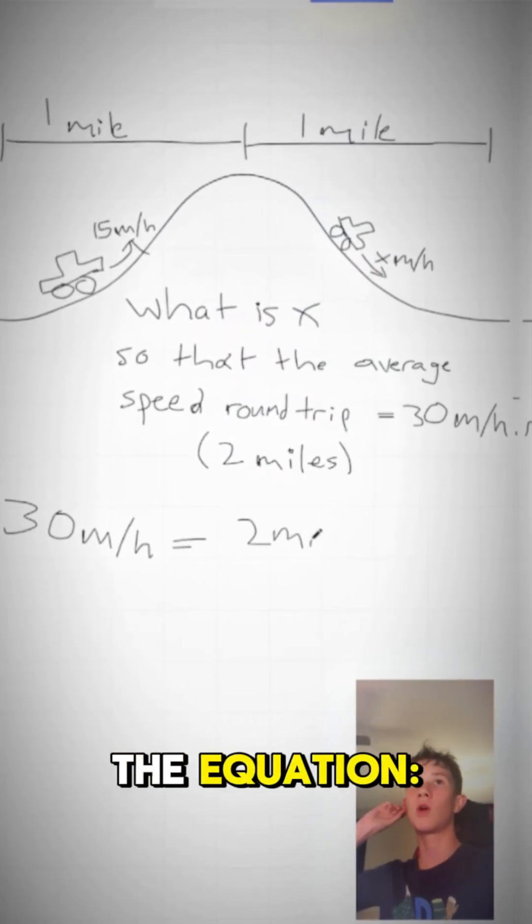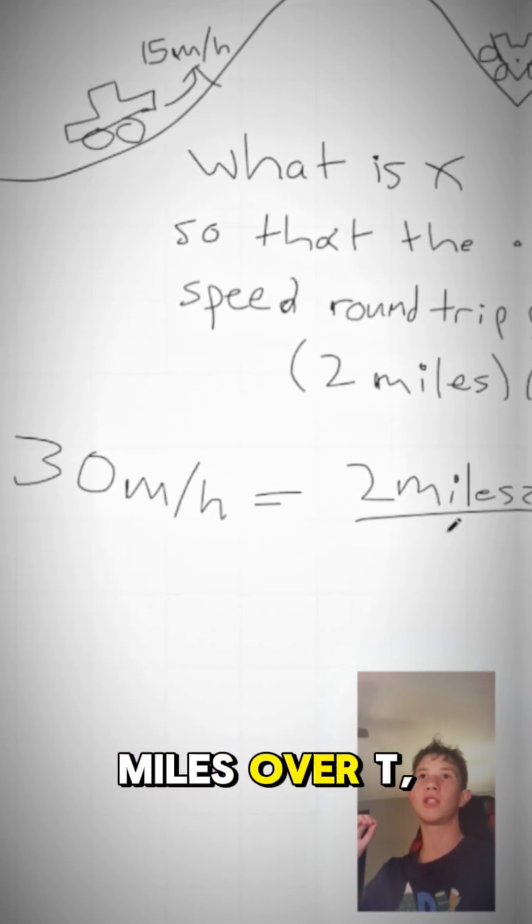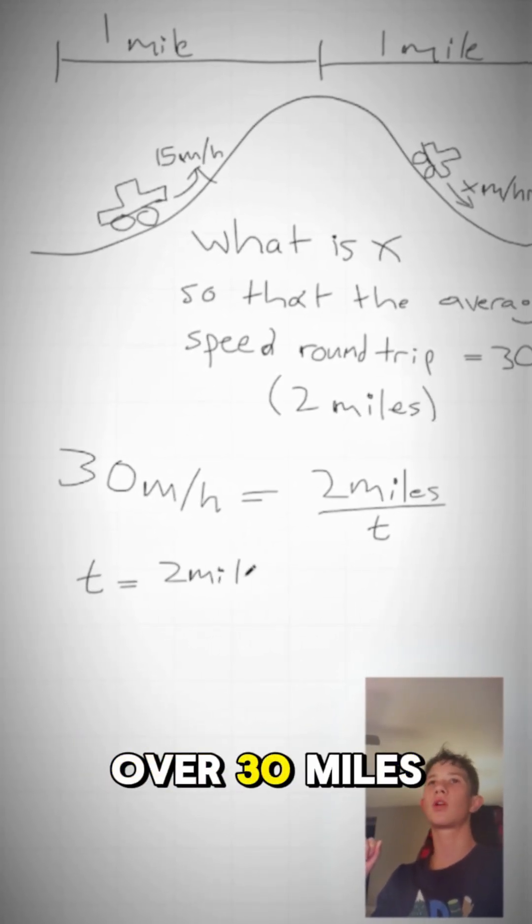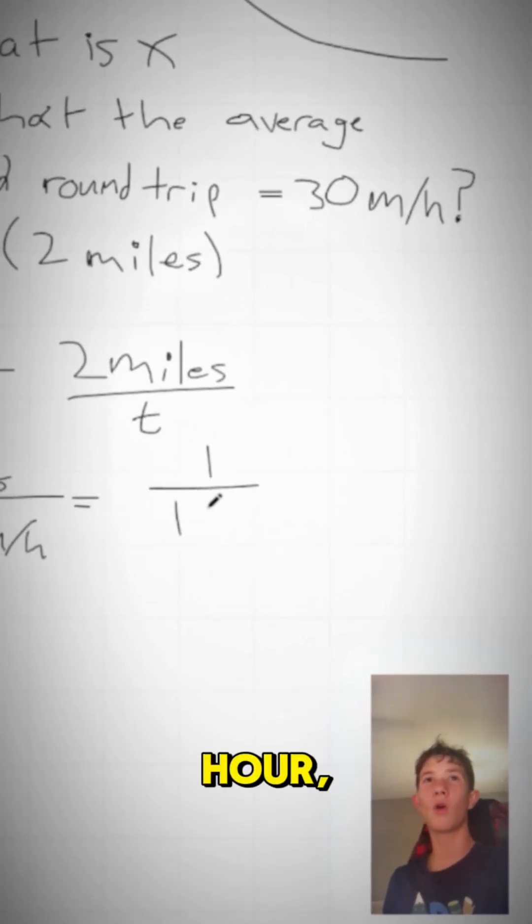30 miles per hour on the two-mile trip, so we can set up the equation: 30 miles per hour equals 2 miles over T, the amount of time spent on the trip. Rearranging to solve for time, we get T equals 2 miles over 30 miles per hour, which simplifies to 1/15th of an hour, or 4 minutes round trip.